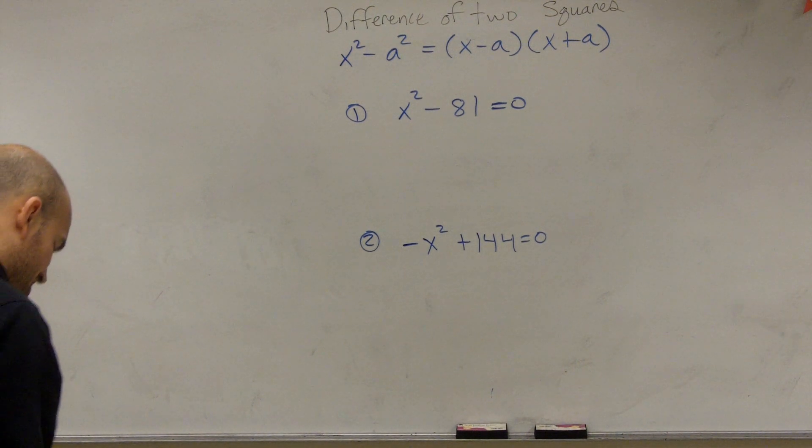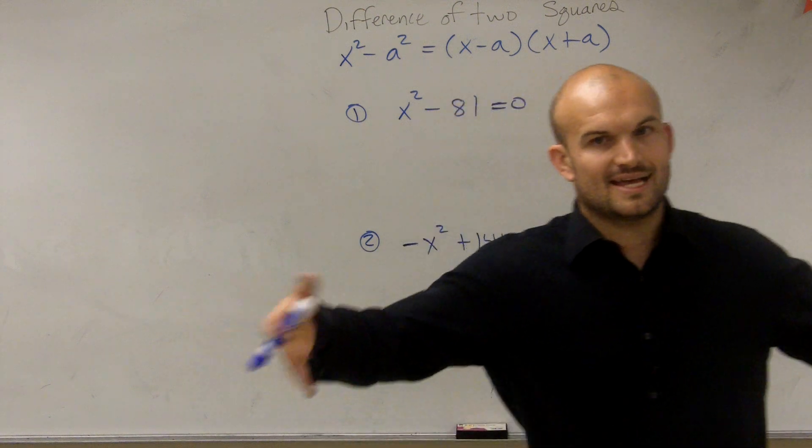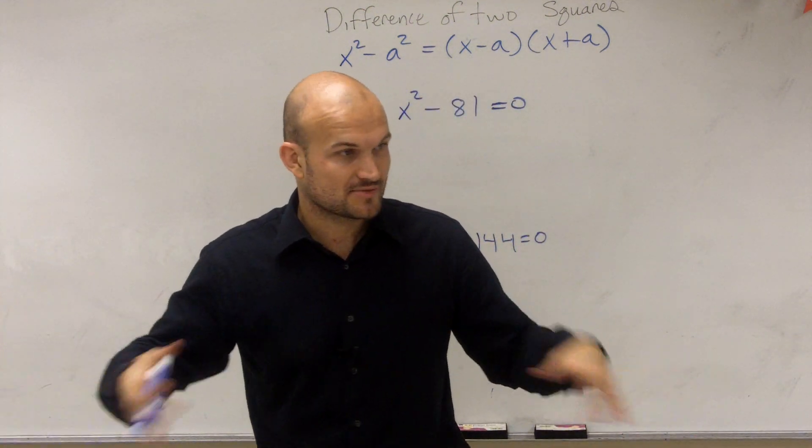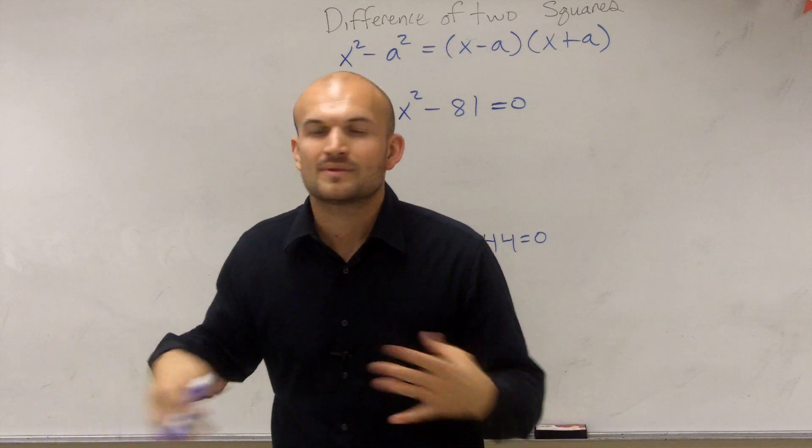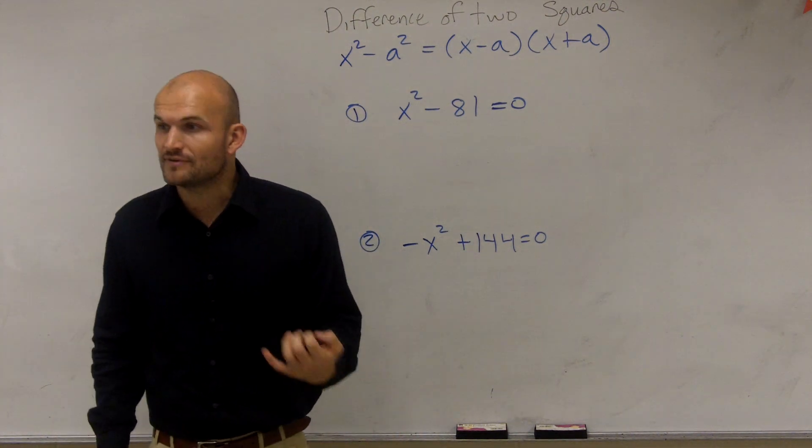Okay, so the next one you guys want to look at, so far we talked about general factoring, right? You just take it and use your diamond problem and factor it. Then we looked at perfect squares because once you have a perfect square, it's pretty easy to do, right? The next kind of shortcut you want to look at is what we call the difference of two squares.